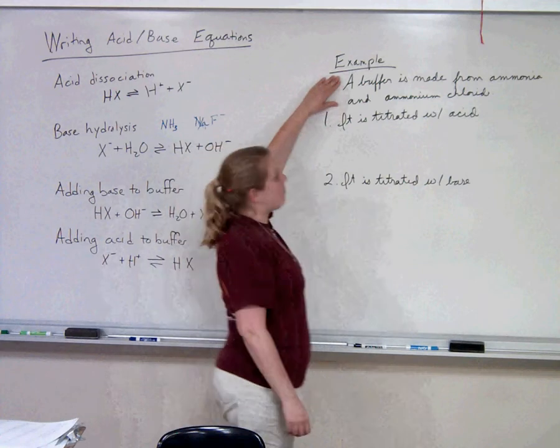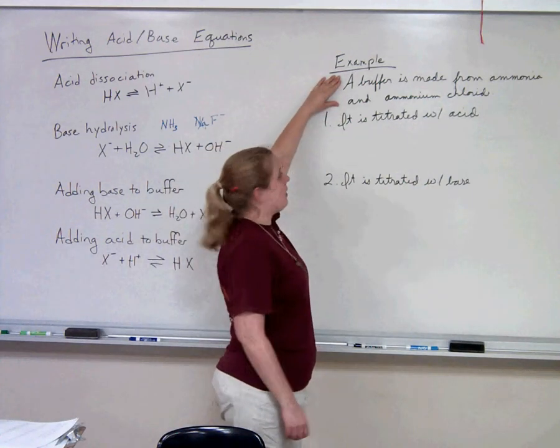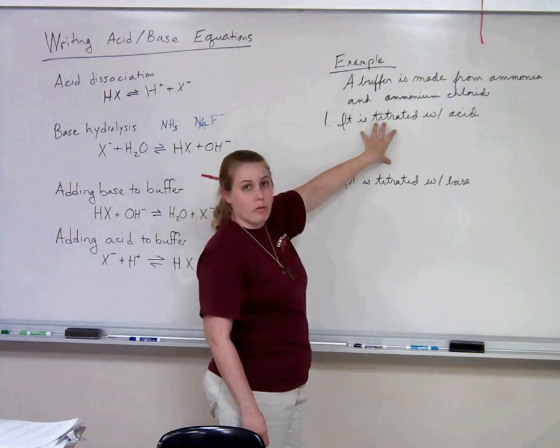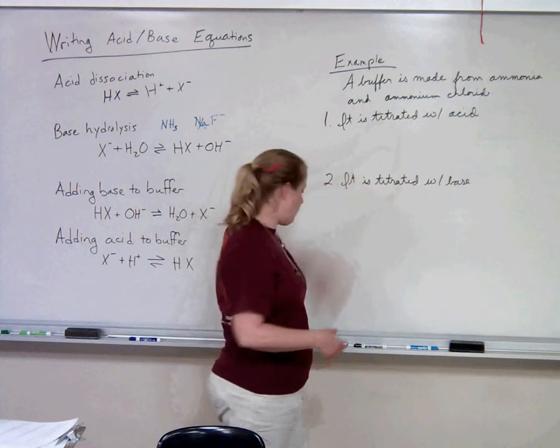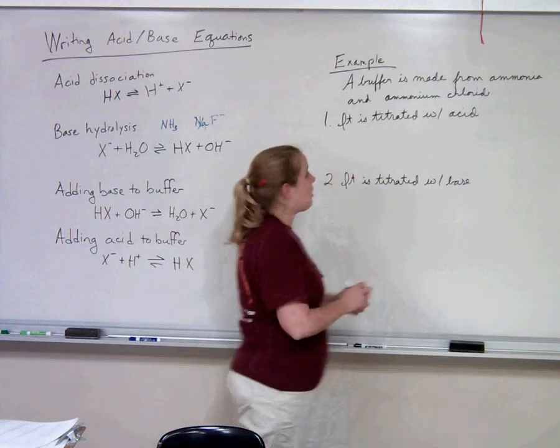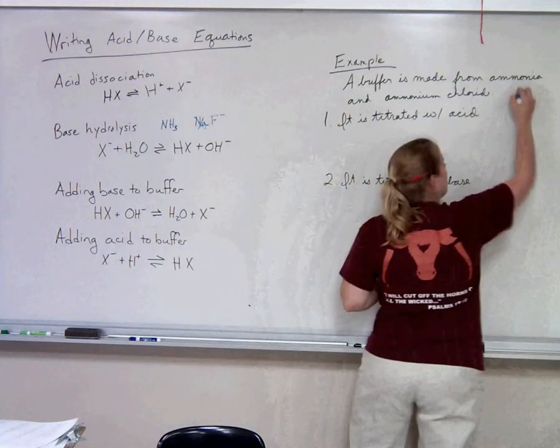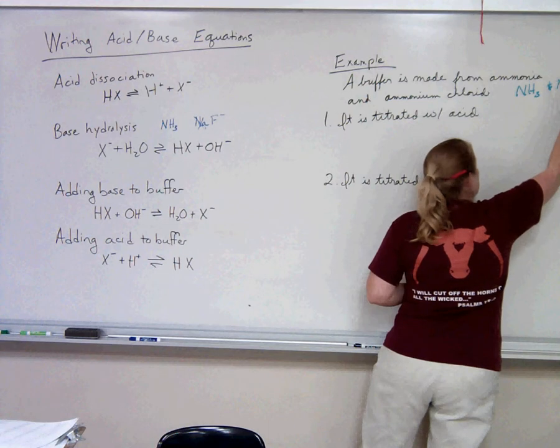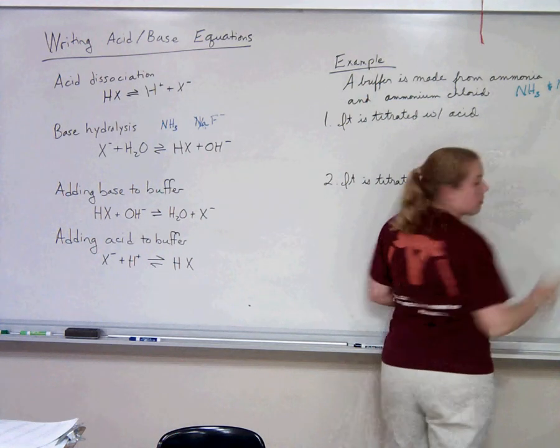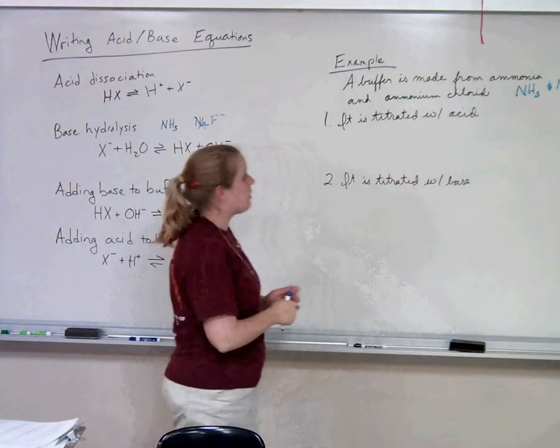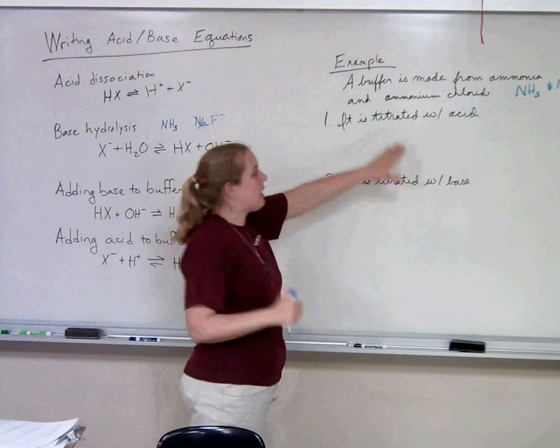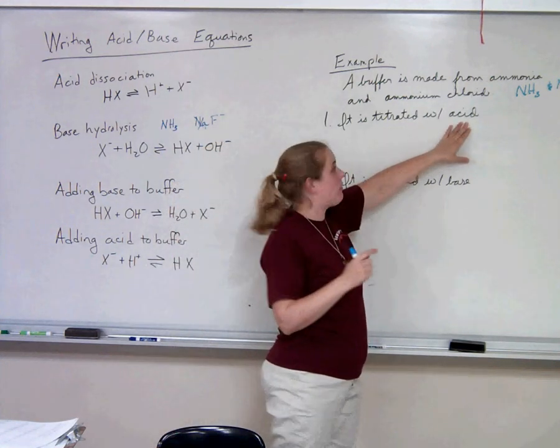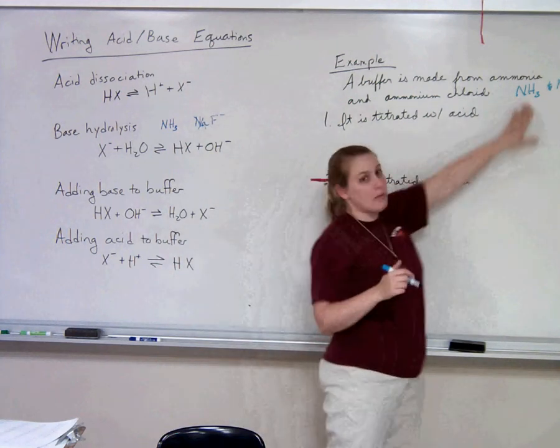Let's try an example. We're making a buffer from ammonia and ammonium chloride, and we're going to titrate that buffer with acid. So we start off with ammonia, NH3, and ammonium chloride, NH4Cl. We don't care about the chlorine, it's just a spectator ion. So if we're going to add acid to this, we're going to add it to the base portion of the buffer. We're going to take our ammonia,